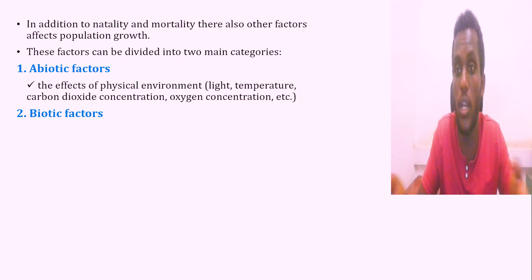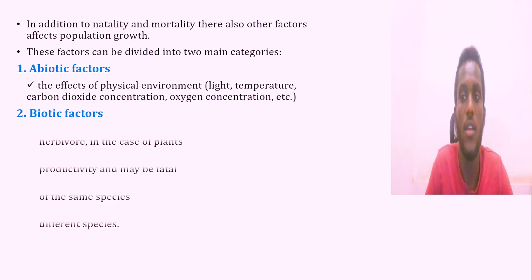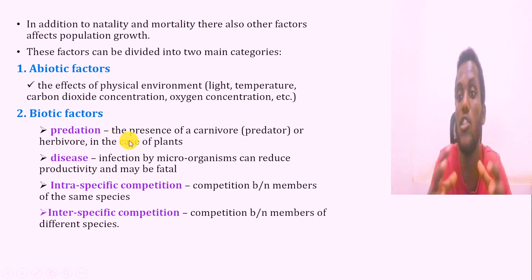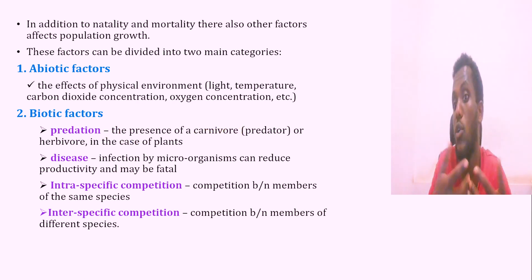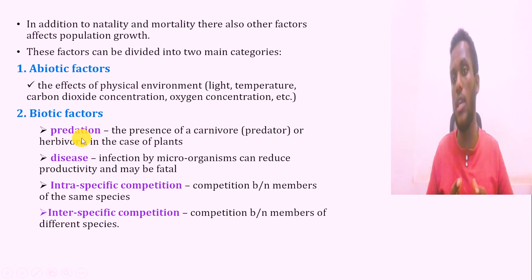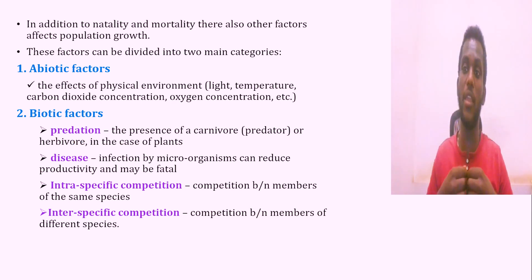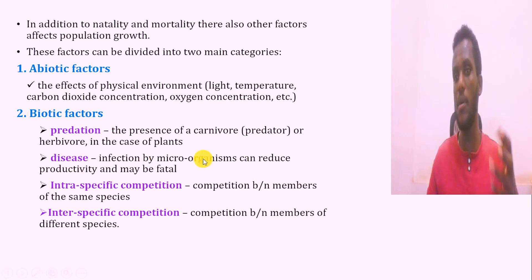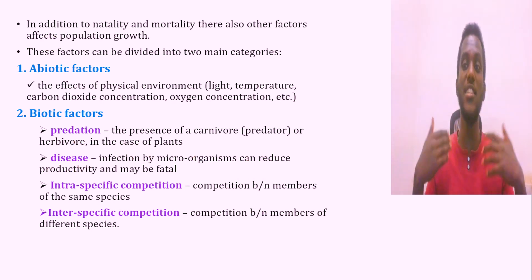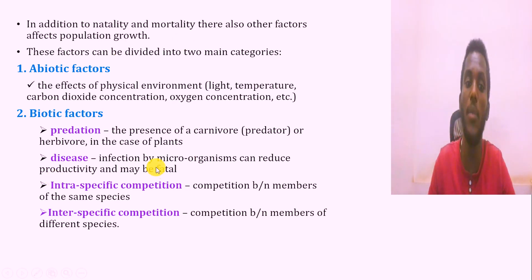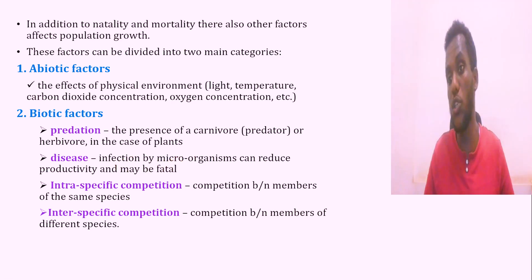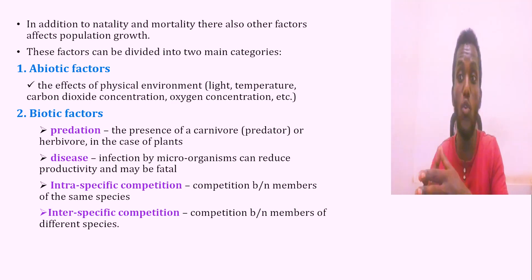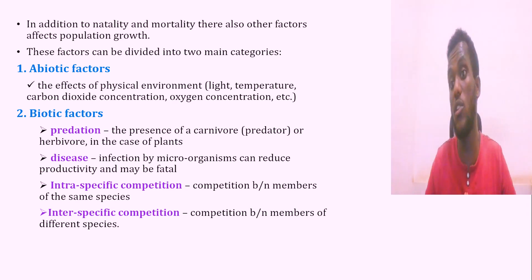Biotic factors are living factors — these involve interactions between organisms. For example, predation: a carnivore feeding on a herbivore. Disease is also a biotic factor — microorganisms that cause disease can reduce population size. For example, the coronavirus caused millions of people worldwide to die, decreasing the human population.